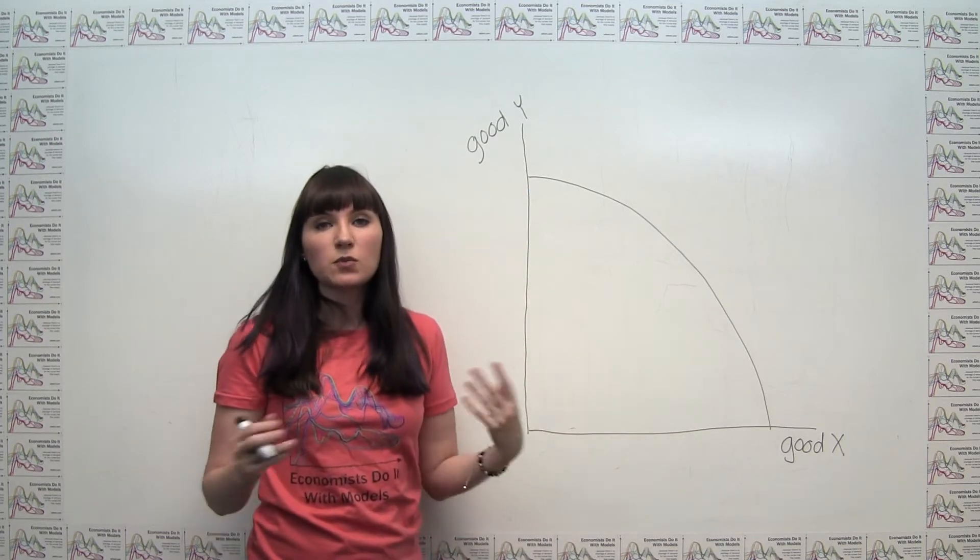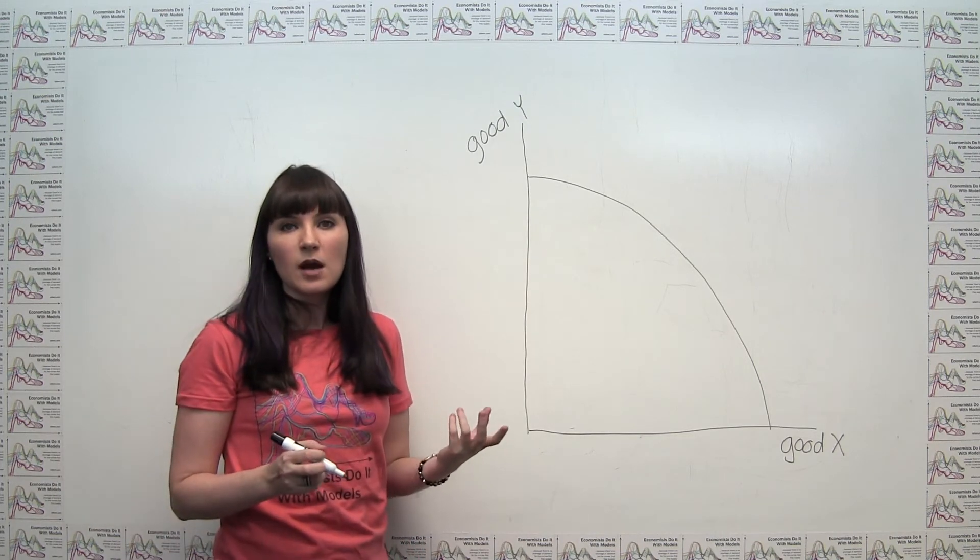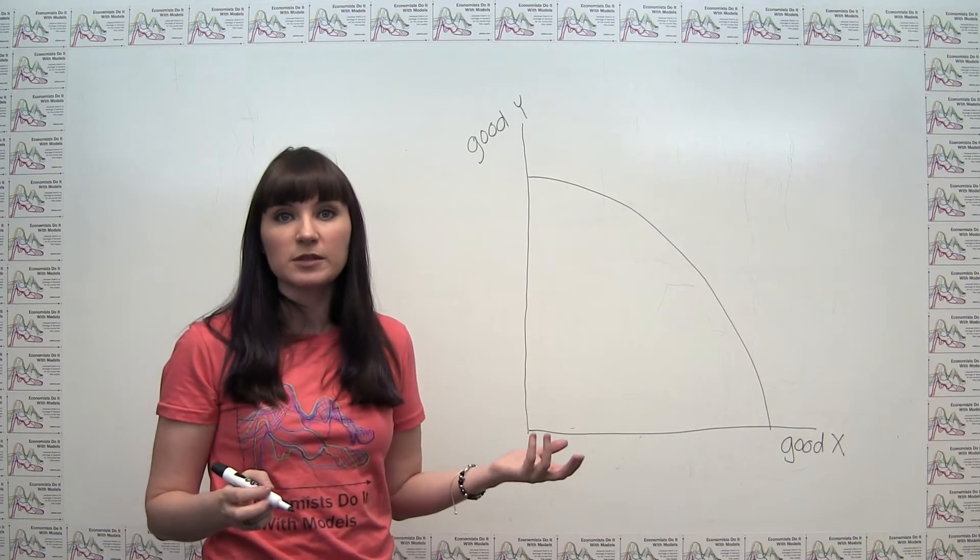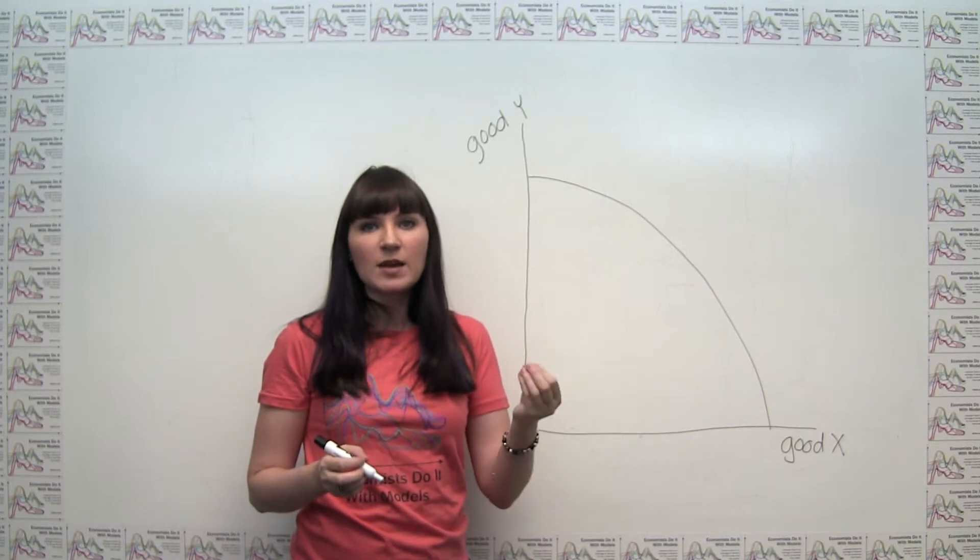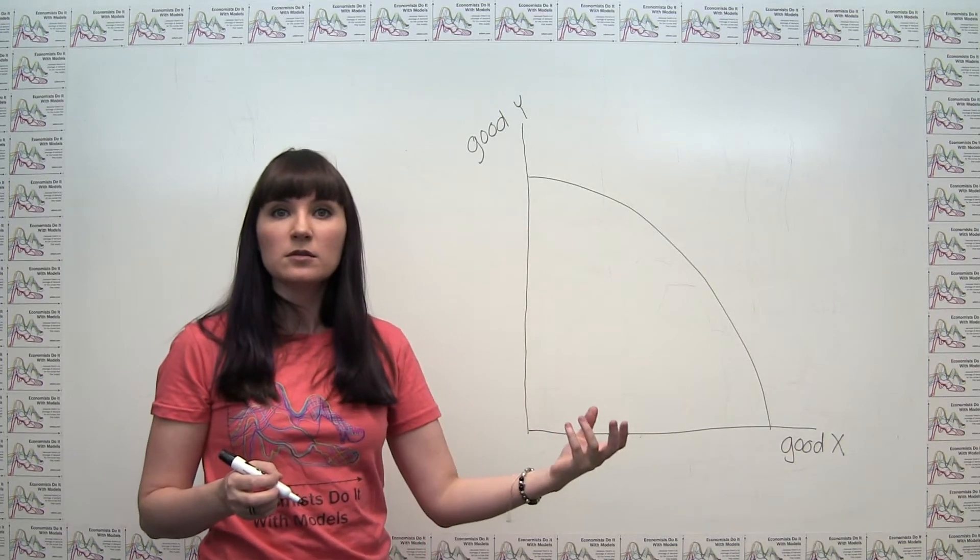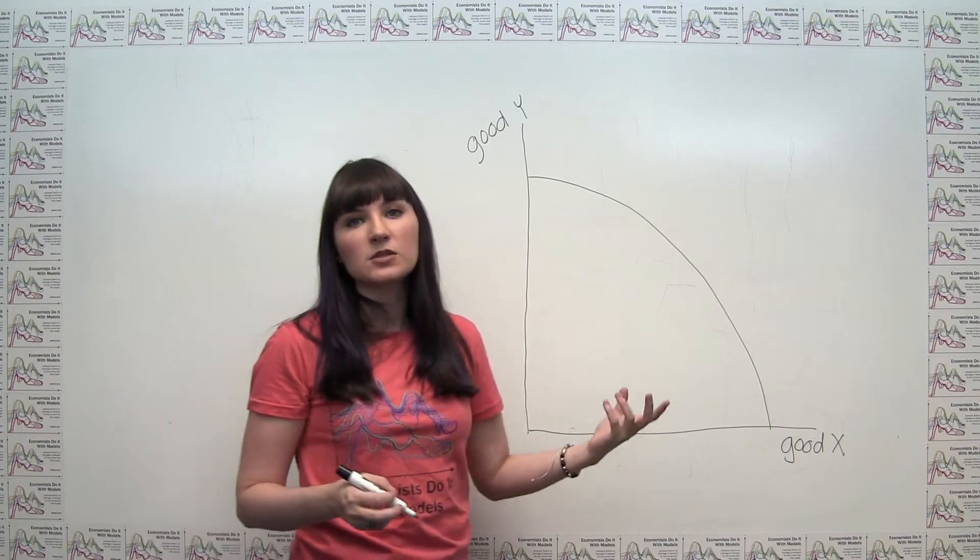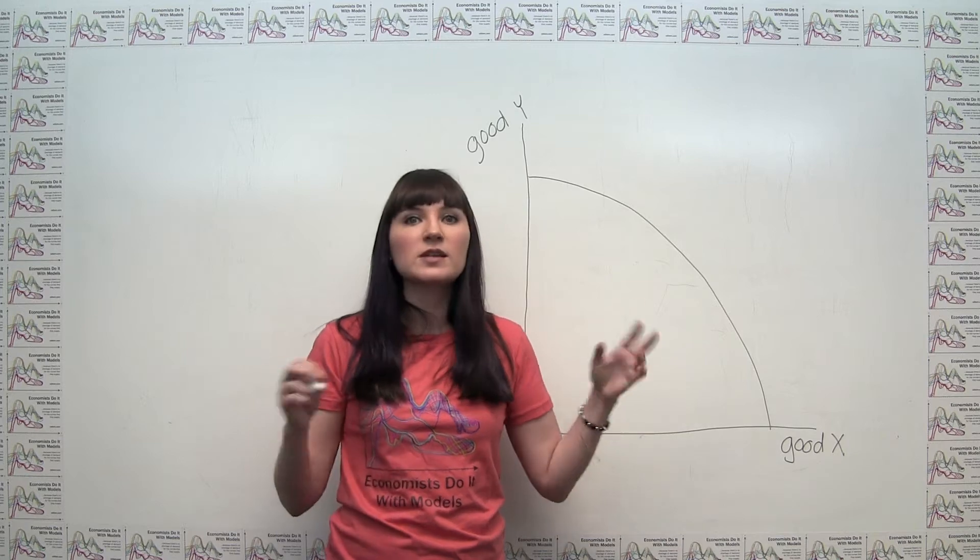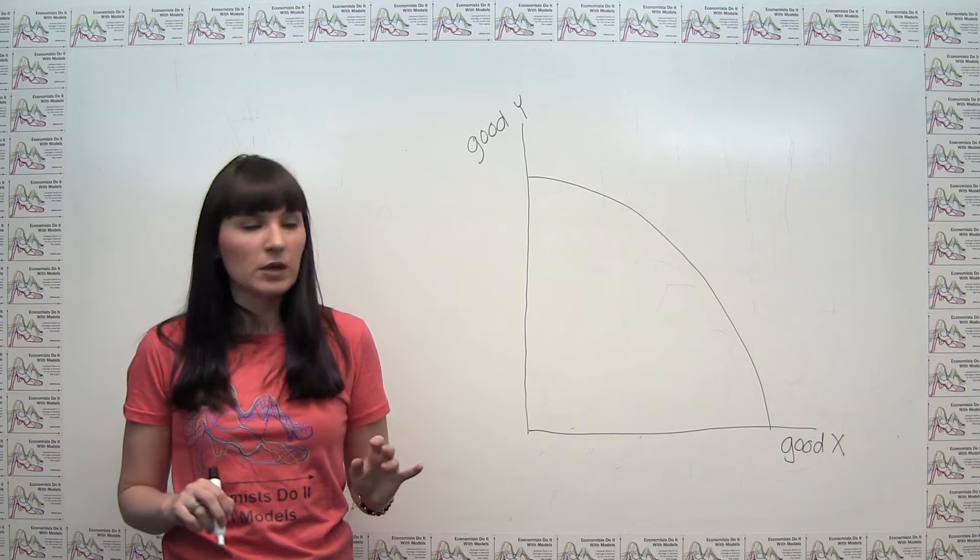So back to the question at hand, which is one of unemployment. And by definition, unemployment is a situation where resources are not being used efficiently. That as long as a person is able to do something, able to produce something, employing that person is going to result in higher output than not employing that person. Unless of course you're just getting in everybody's way and really reducing overall output, but let's assume that away for the time being.